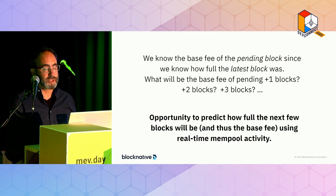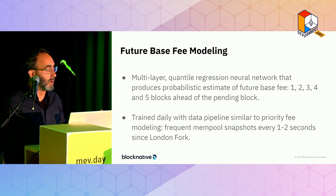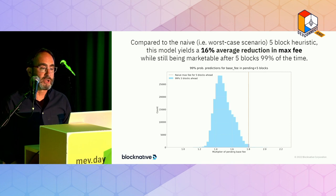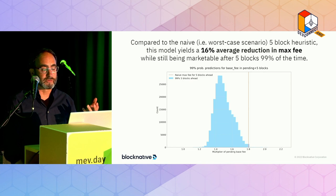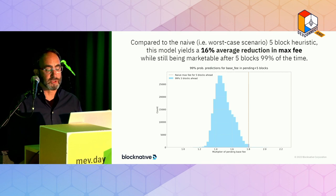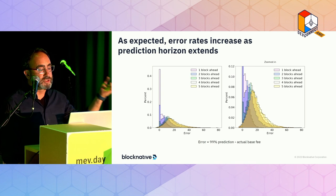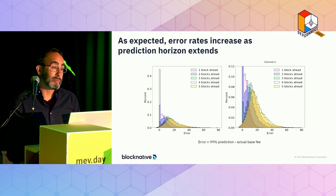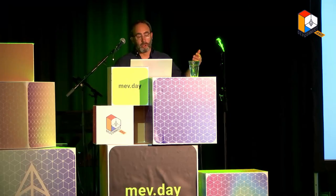The good news is it looks like it's working. We've released a multi-layer quantile regression neural network that does this, and since deployment we're seeing about a 16% average reduction in max fee calculations — getting a lot more precise and sophisticated in how we can look into the data, predict into the future, and make more informed decisions both as regular users and as searchers. Of course, the further we go into the future we get higher error rates — very confident one block ahead, less confident two blocks ahead — and we're now publishing five blocks ahead. These are in our payloads today; you can inspect them at the bottom of every payload.